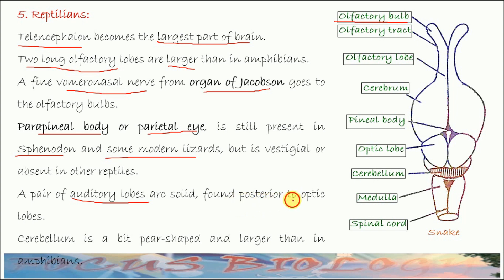A pair of auditory lobes are also found in some reptiles, positioned posterior to the optic lobes. Auditory lobes are solid. The cerebellum is a bit pear-shaped, but larger than in amphibians.